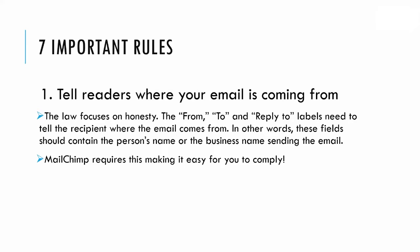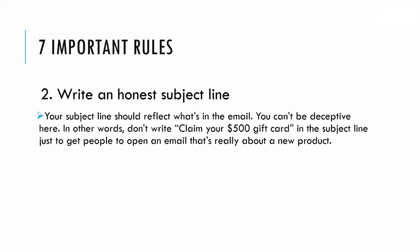Number one: tell readers where the email is coming from. The law focuses on honesty — the From, To, and Reply-To labels need to tell a recipient where the email comes from. In other words, these fields should contain the person's name or business name sending the email. MailChimp requires this, making it easy for you to comply.